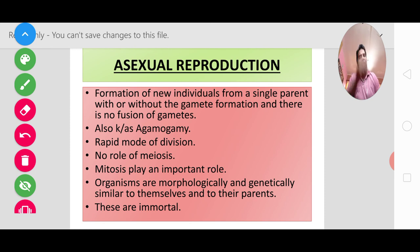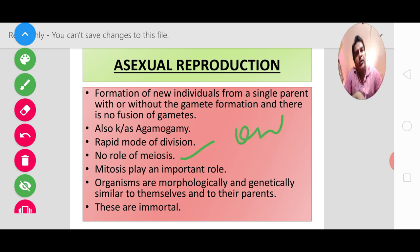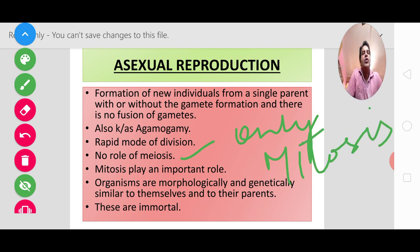The most important fourth point we have written: there is no role of meiosis here. Remember — only mitosis. Only mitosis division is there. Meiosis has no role in asexual reproduction.